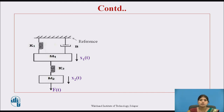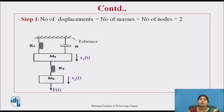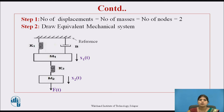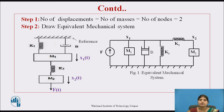First we go through the steps. Step 1: number of displacements equals number of masses equals number of nodes. Here there are two masses, so there are two nodes. Step 2: draw the equivalent mechanical system. X1 and X2 are the nodes; M1 is connected between X1 and reference, M2 between X2 and reference. K2 is connected between nodes X1 and X2, and K1 and damper B are connected between reference and node X1. Force F is applied in the direction of displacement.